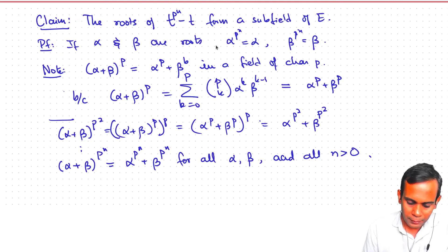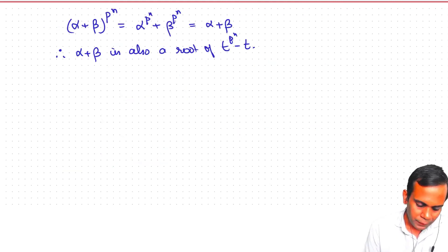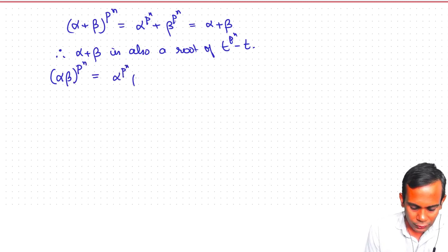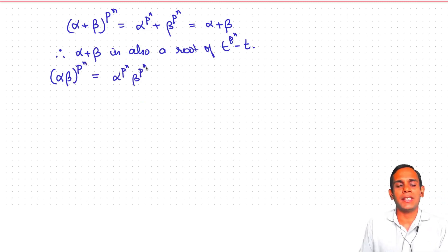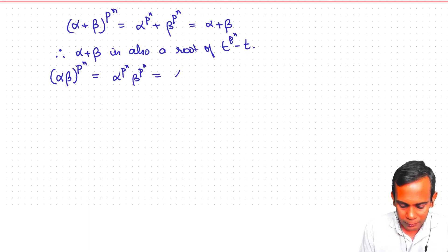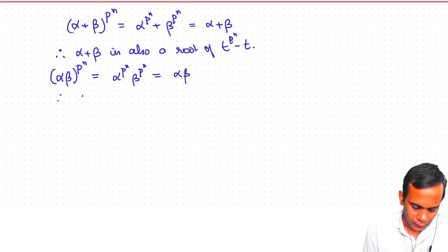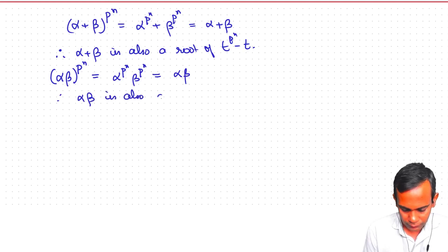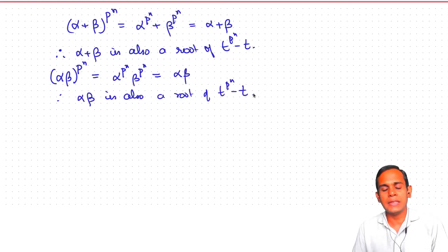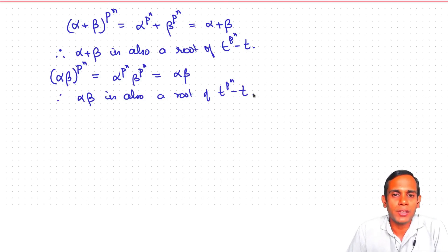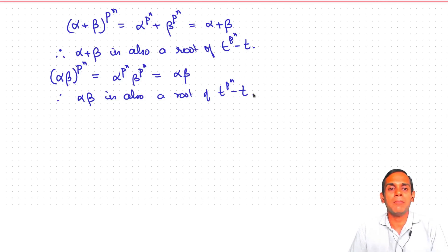What we have shown is that if α and β are roots, then α + β is a root. It is also easy to show that if α and β are roots, then αβ is also a root: (αβ)^(p^n) = α^(p^n) · β^(p^n) = α · β, since multiplication is commutative. Also, 0 and 1 are roots. So the roots of t^(p^n) − t form a subring of E.